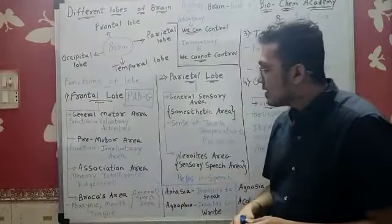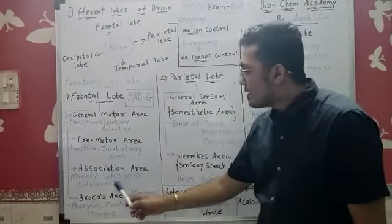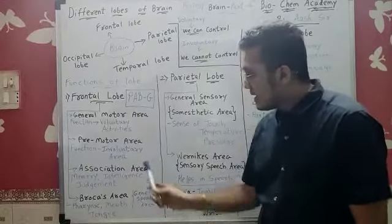Association area: memory, intelligence, judgment-taking ability. This is controlled.